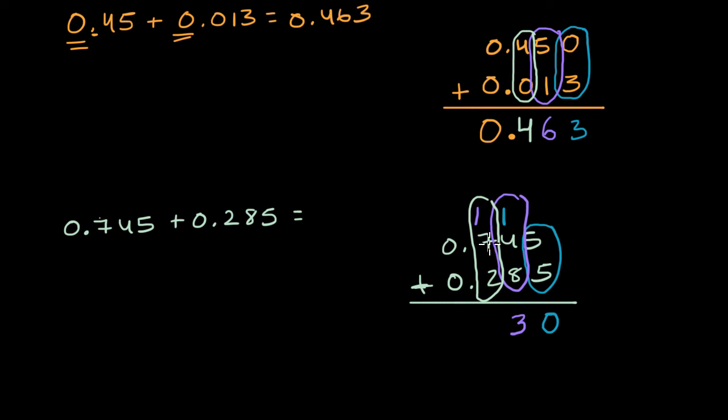And we have one plus seven plus two. That's 10 tenths. Well, 10 tenths is a whole. So we could regroup 10 tenths as one whole. So what we would do is we would say, okay, that is the same thing as zero tenths and one whole. And then last but not least, we can add the one whole plus a bunch of zero wholes or zero ones. And we're gonna be left with just a one. And we're done. This is going to be equal to 1.030.